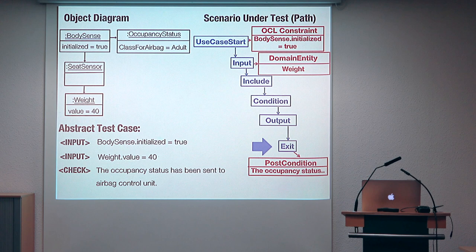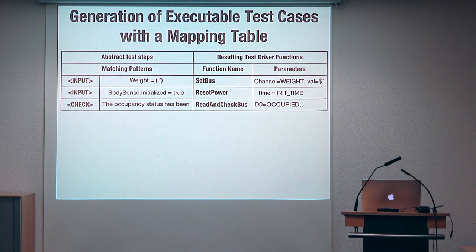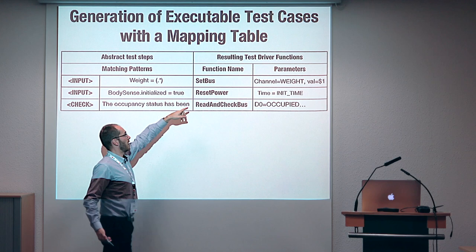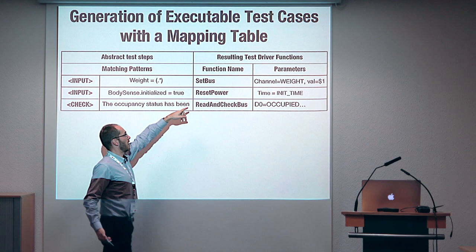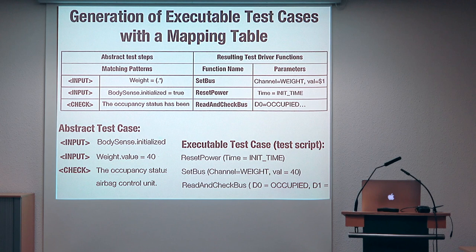What we have here is what we call an abstract test case, where the inputs are specified in terms of the entities of the domain. Next, what we do is to generate an executable test case, because we are using these for a company and they want executable test cases, not abstract test cases. We do that in the standard way: we have a mapping table with patterns that match the abstract inputs and translate them into concrete functions that should be executed on the test environment. For example, when you have a weight equal to some value, you invoke the function setWeight with the same value as a parameter. This enables us to take an abstract test case and generate an executable test case.